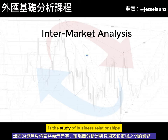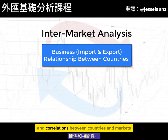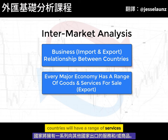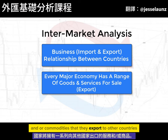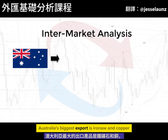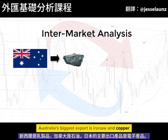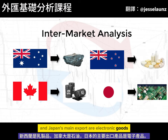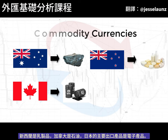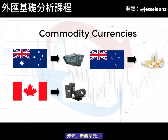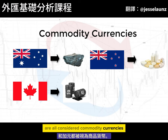Intermarket analysis is the study of business relationships and correlations between countries and markets. Countries will have a range of services and commodities that they export to other countries. Australia's biggest exports are iron ore and copper, New Zealand's is dairy, Canada's is oil, and Japan's main exports are electronic goods. Countries whose main export is a commodity are known as commodity currencies — the Australian dollar, the New Zealand dollar, and the Canadian dollar are all considered commodity currencies.